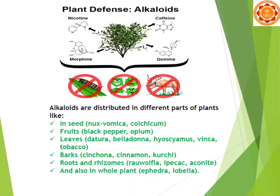As secondary metabolites, alkaloids serve as a self-defense mechanism of plants. Due to the presence of alkaloids, different animals and small insects that would otherwise eat the plants are deterred. Examples of such alkaloids include nicotine, caffeine, morphine, and coniine.